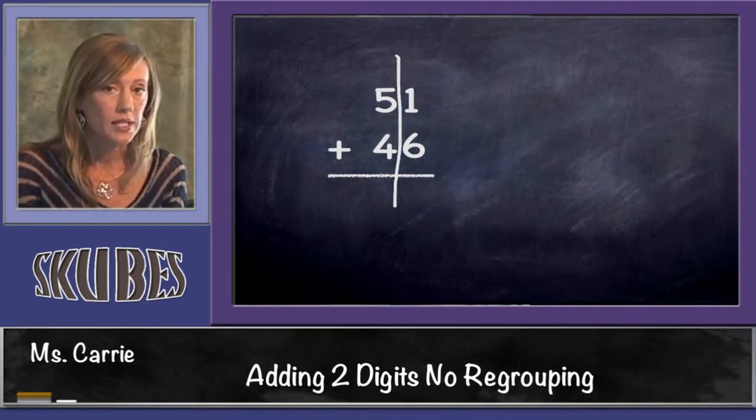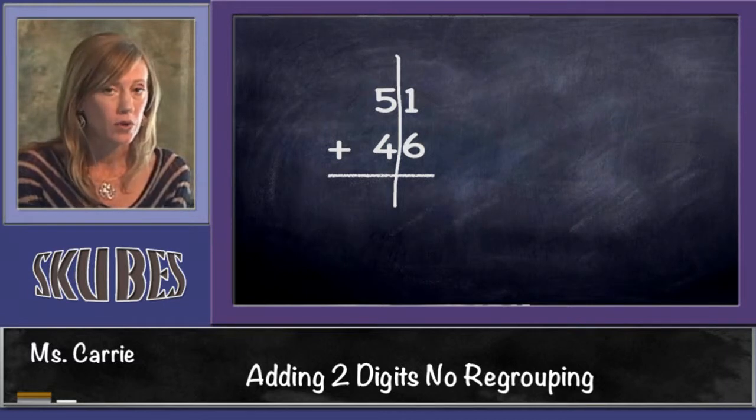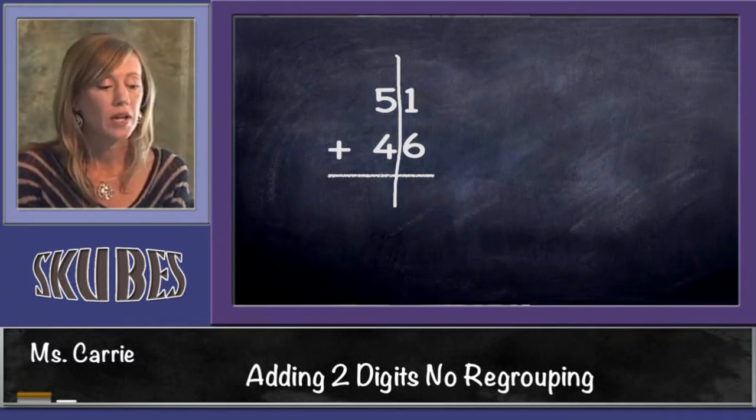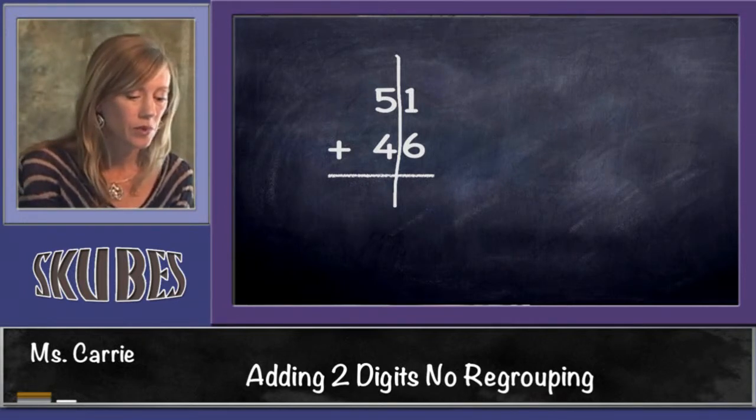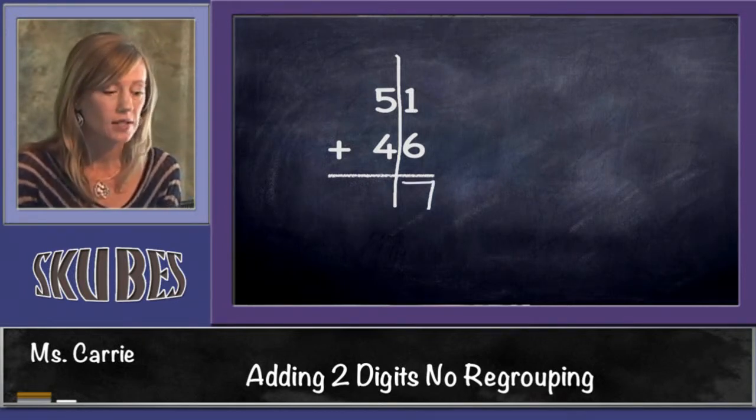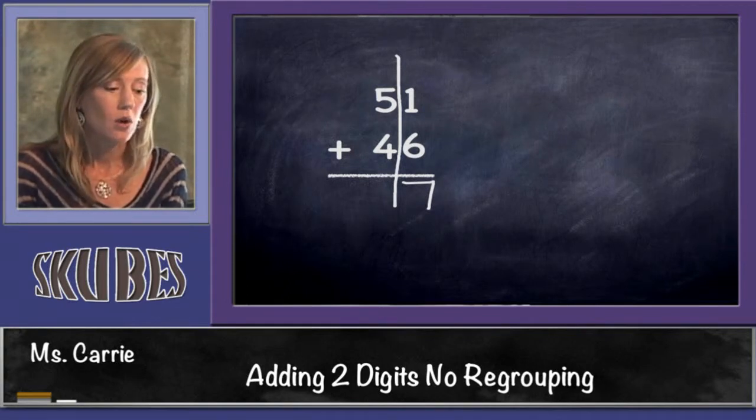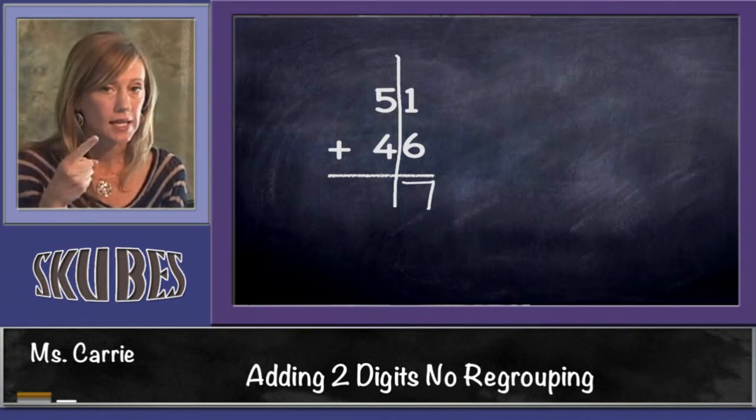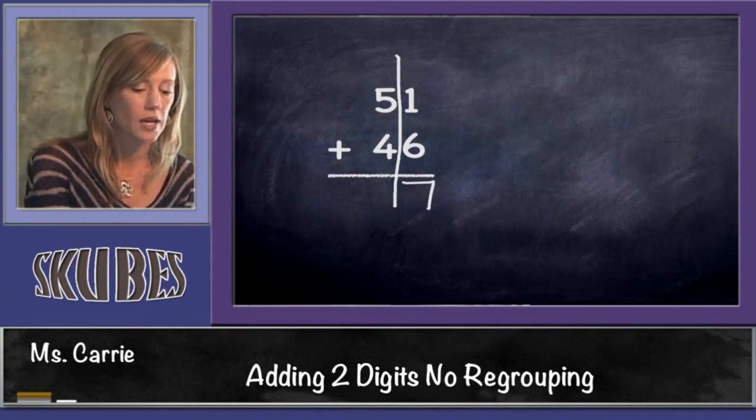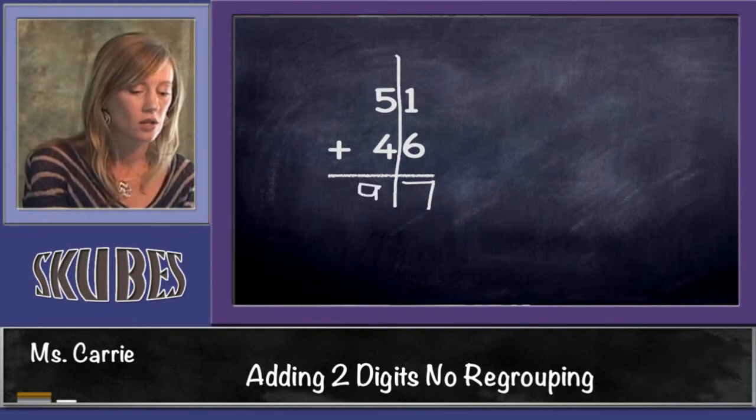We're adding 1 plus 6. When we add two numbers, we want to start with the bigger number and then count on. The bigger number is 6, plus 1 more is 7. Then we can move over to the tens place and do 5 plus 4. Five is the bigger number. Start with 5 and count on: 6, 7, 8, 9. So our answer is 97.